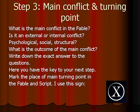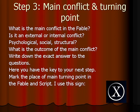Phase two, step three — closing the text. Now we have to look for the main conflict and the main turning point. You have to ask yourself: what is the main conflict in the fable? Is it an external or internal conflict — that is, a social conflict or a psychological conflict? What is the outcome of the main conflict? Write down the exact answers to the questions. Mark the place of the main turning point in the fable, and you can also do it in the script. I will use a big X inside a circle when marking the main turning point.